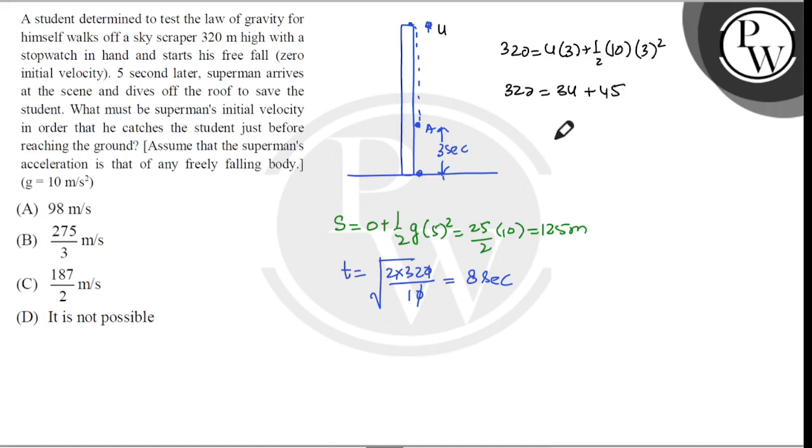So 3u is equal to 320 minus 45, which is equal to 275. Therefore u equals 275 by 3 meter per second, which is option B.